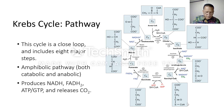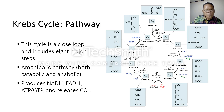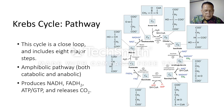Step 6 is a dehydration process that converts succinate into fumarate. Two hydrogen atoms are transferred to FAD, producing FADH2. The energy contained in the electrons of these atoms is not sufficient to reduce NAD+ but is adequate to reduce FAD. Unlike NADH, this carrier remains attached to the enzyme and transfers electrons to the electron transport chain directly. This is made possible by the localization of the enzyme inside the inner membrane of the mitochondria.